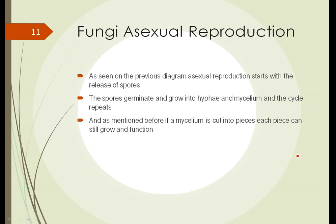Asexual reproduction begins with the creation of spore-producing structures, which then release spores. The spores germinate and grow into hyphae, then mycelium, and the cycle repeats. If a mycelium is cut into pieces, each piece can still grow and function independently — that's the other method of asexual reproduction.